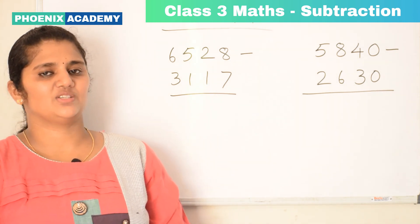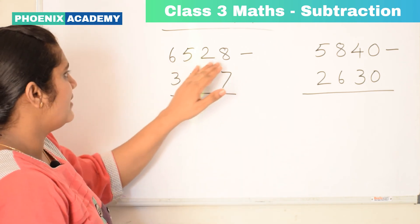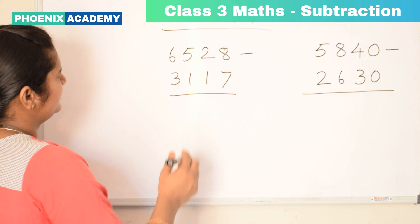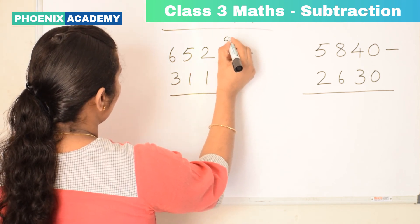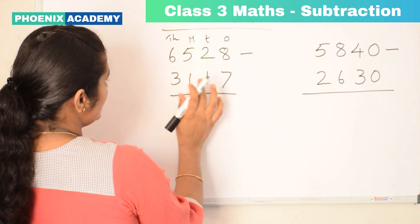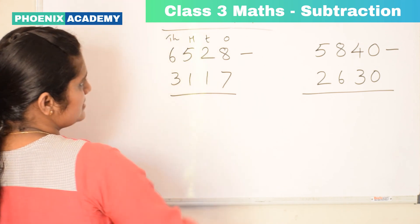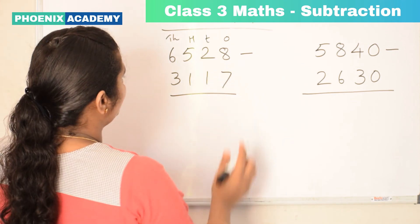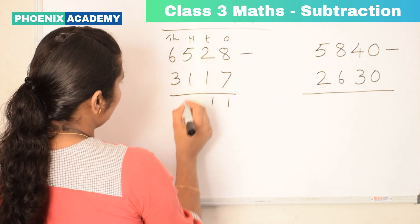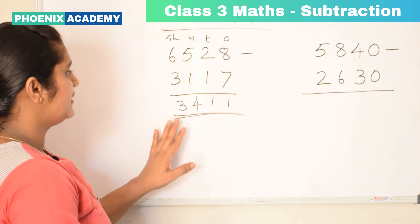Now let's learn subtraction of 4-digit numbers. 6,528 minus 3,117. 6,528 is 8 ones, 2 tens, 5 hundreds, and 6 thousands. 3,117 is 7 ones, 1 ten, 1 hundred, and 3 thousands. Let's subtract from ones: 8 minus 7 is 1, 2 minus 1 is 1, 5 minus 1 is 4, 6 minus 3 is 3. So the difference is 3,411.